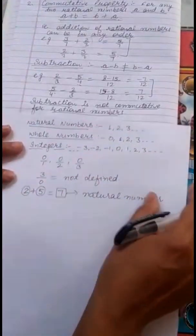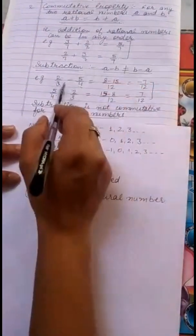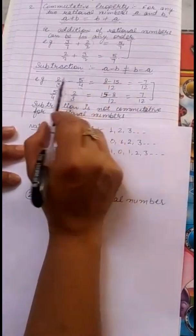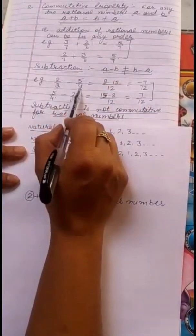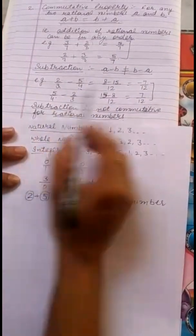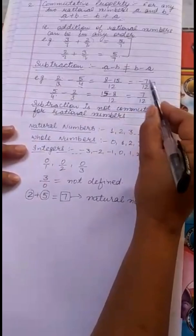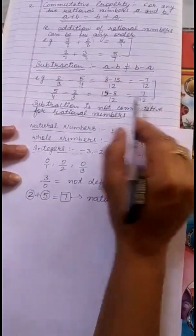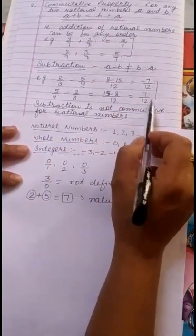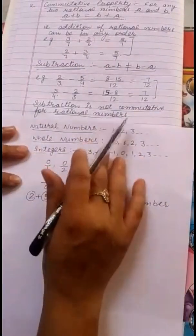Now, what about subtraction? A minus B is not equal to B minus A. Taking two numbers 2 by 3 and 5 by 4: the difference 2 by 3 minus 5 by 4 gives minus 7 by 12. Changing the order, 5 by 4 minus 2 by 3 gives plus 7 by 12. The two results are not the same, so subtraction is not commutative for rational numbers.